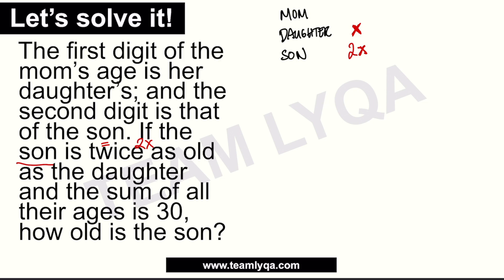Now we need to find the representation for the mom's age. We're talking about digits, so the first digit is the daughter's age, which is x, and the second digit is the son's age, which is 2x. But we can't just write them like that — it's not multiplication and it's not addition. What do digits actually mean?